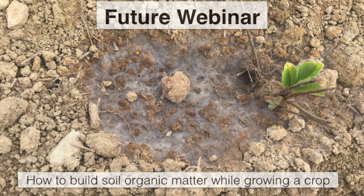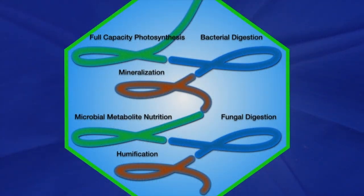One of the pieces we want to talk about in a future webinar is how to build soil organic matter while we are growing a crop. Some of the tools and techniques we have learned incorporate ways that allow plants to develop really high oil content while growing, which allows us to build really aggressive and strong fungal digestive systems in the rhizosphere and in the soil profile. This image is a picture of a strawberry transplant one week after being transplanted, showing really strong fungal hyphae development that developed within a week of being transplanted, even without irrigation on bare ground.